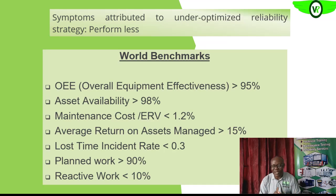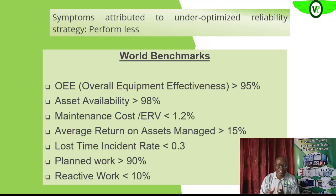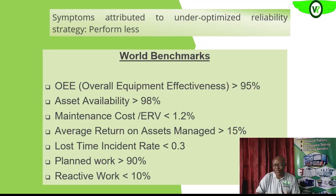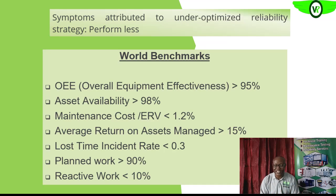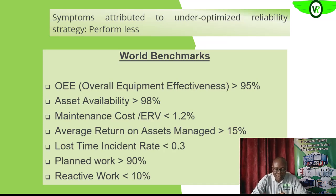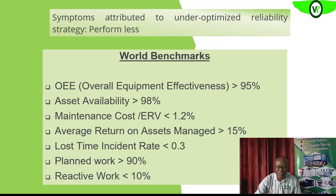With an optimized system, world benchmark KPIs — key performance indicators — will be approached and even exceeded. Equipment effectiveness, especially in the manufacturing sector, will improve across efficiency, availability, and product quality or throughput. Asset availability will approach or go beyond 98%, equipment maintenance costs will go down, and the ratio of maintenance cost to replacement value will come down — meeting industry standards across the various KPIs.